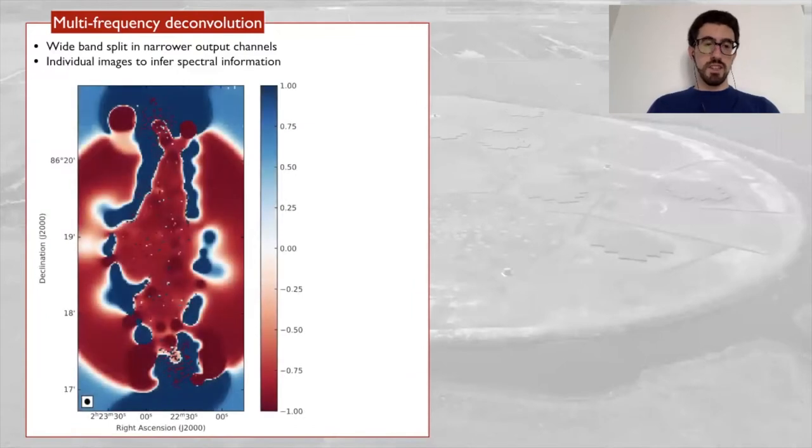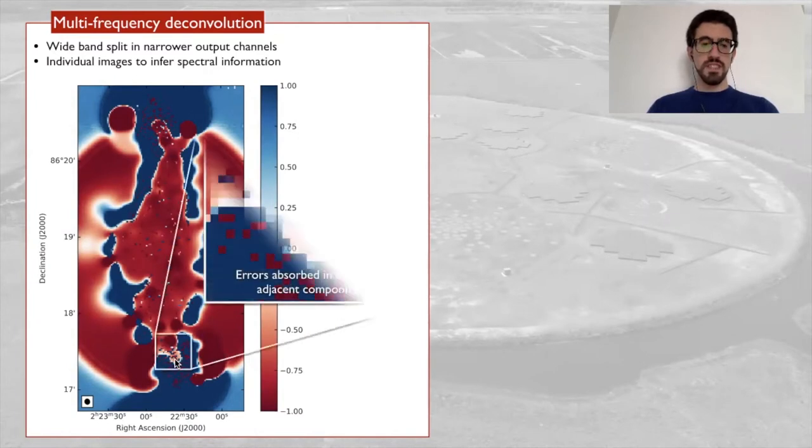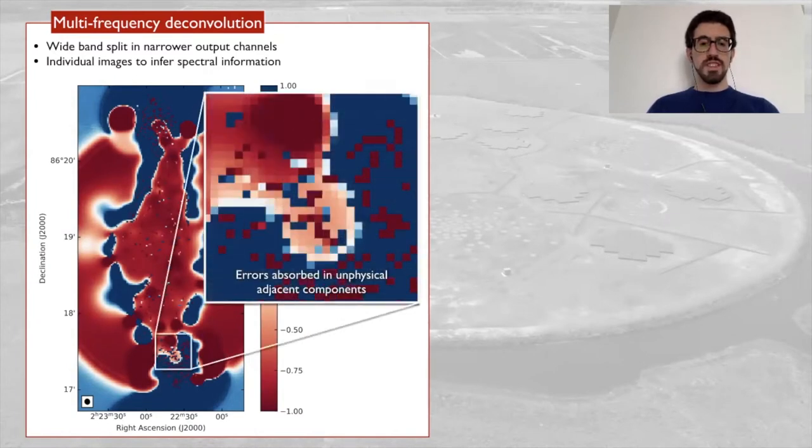Here you see the spectral index map obtained from the standard method, and it doesn't look so good, especially if we look here, we see that errors in the data are absorbed in unphysical adjacent components.